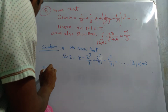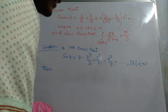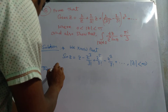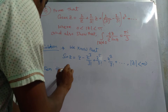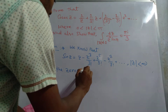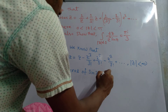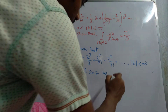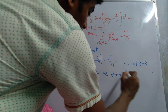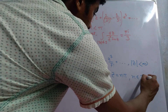Then we note the zeros of sin z. The zeros of sin z are at z = nπ, where n belongs to ℤ.